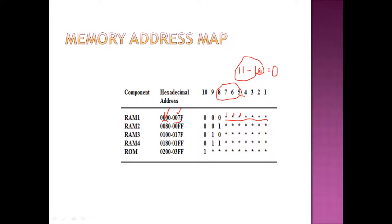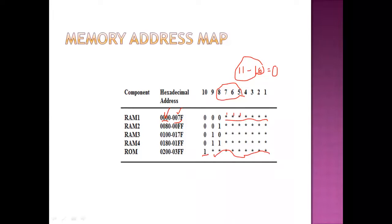Similarly, we can find the range for RAM chip 2, 3, 4. For the ROM chip, the 10th bit is 1 and the rest are used. The minimum range puts all zeros and for the maximum range, we put all ones, giving us an address range of 0200 to 03FF.